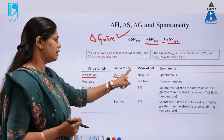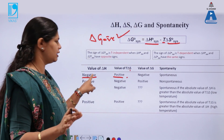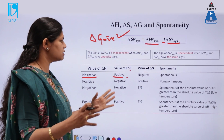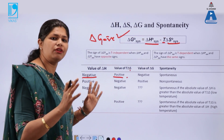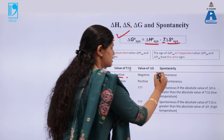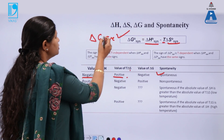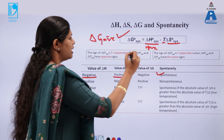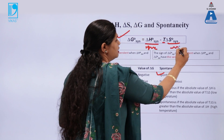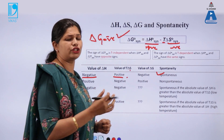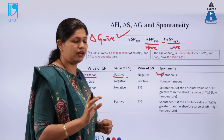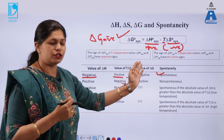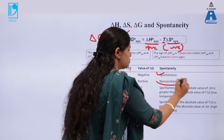When delta H is negative, entropy is increasing, and the system is following an exothermic reaction, the reaction will always be spontaneous. The second case is when delta H is positive and delta S is negative. This reaction, irrespective of temperature, will always be non-spontaneous, because the T delta S term will be negative and delta G will be positive. So this will always be non-spontaneous.